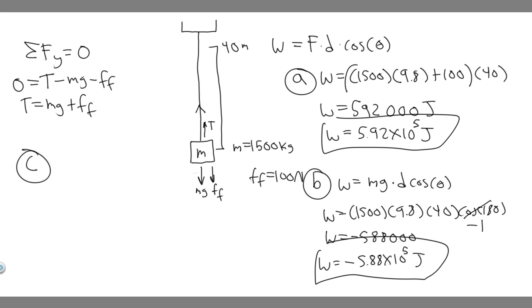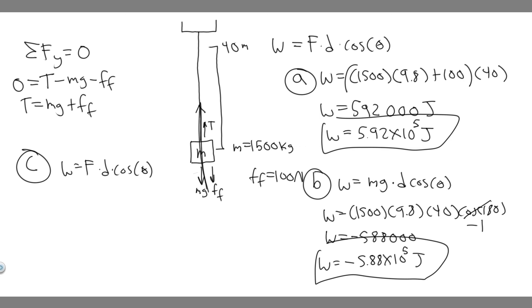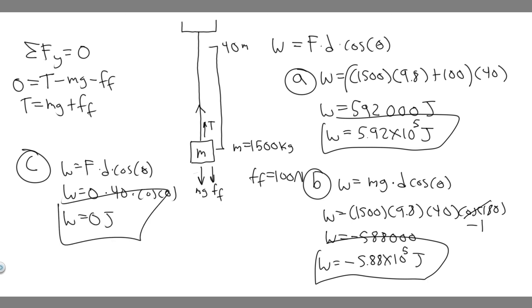Now for part C, we're finding the total work done by the lift. Using work equals force times distance times cosine of theta, we take the total force by adding up all forces in the y direction. Since the sum of forces in the y equals zero — they balance out — the net force is zero. Multiplying by zero means none of the rest matters: the total work done is 0 joules. So your answer to C is 0 joules. Those are your answers for A, B, and C.